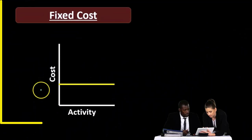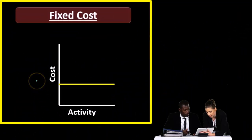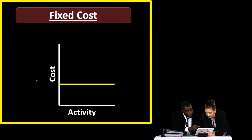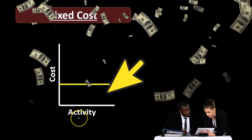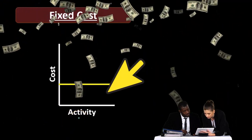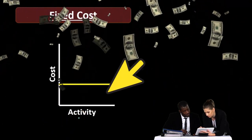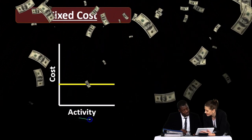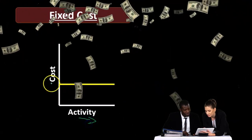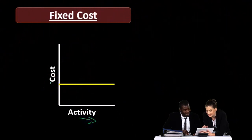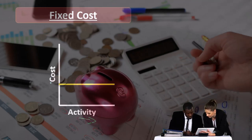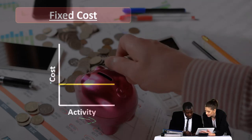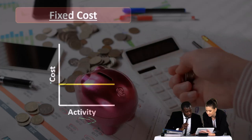So we have fixed costs. Fixed costs mean that as production level rises, the cost remains fixed. For example, if we have the activity — say this is production, if we're making units of something — as we make more units, the cost total remains the same. Remember here that we're talking about total cost, not cost per unit.